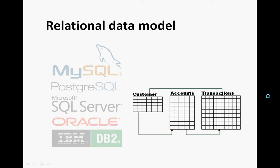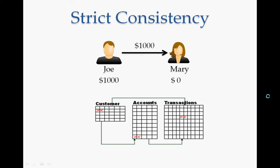SQL databases are mainly based on the relational data model, where data are organized into tables and the relationships between tables can be established by defining foreign key constraints in one table referring back to the primary key of another table. One of the most important features of SQL databases is its guarantee of strict consistency and integrity constraints. For example, in a banking database, when Joe performs a transfer to Mary's account, the database system guarantees that either both accounts are updated or there is no partial update in the event of hardware or software failures.